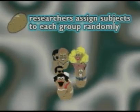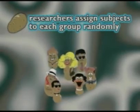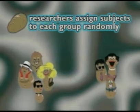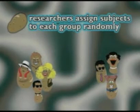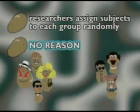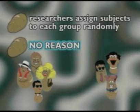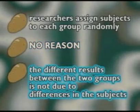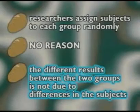If only a couple things are different, it helps narrow the possibilities of what is causing the effects in the experimental groups. Researchers assign subjects to each group randomly — there's no reason why someone's chosen for one group or the other. This helps make sure that the different results between the two groups are not due to differences in the subjects.